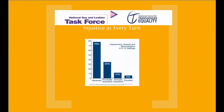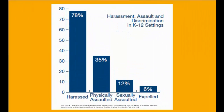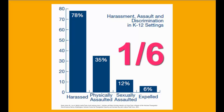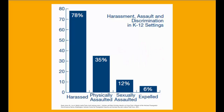Complementing our research at GLSEN, the National Gay and Lesbian Task Force and the National Center for Transgender Equality developed their Injustice at Every Turn report, based on the responses of over 6,000 transgender and gender non-conforming adults, that looks at the depth and breadth of injustice in their lives. The findings are similar to those from GLSEN's National School Climate Survey. Looking back on their school experiences, 78% reported being harassed, 35% physically assaulted, 12% sexually assaulted, and 6% expelled. As a result, almost one-sixth left school altogether.